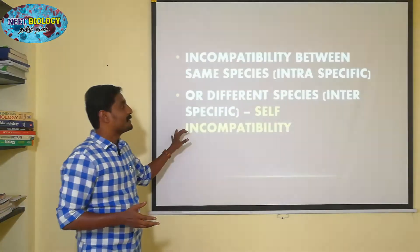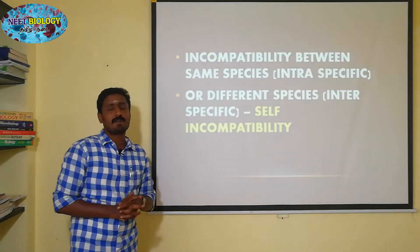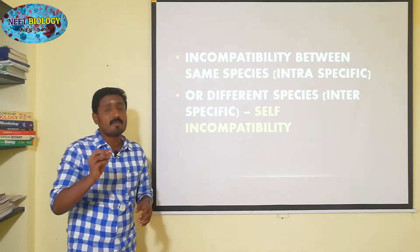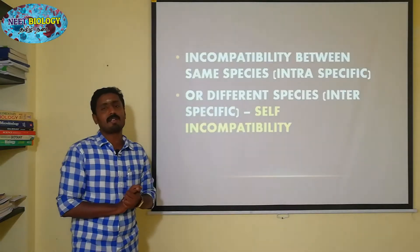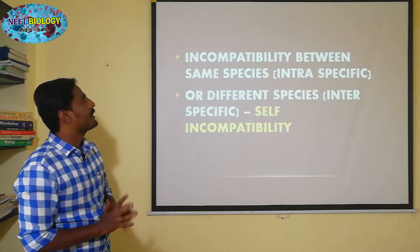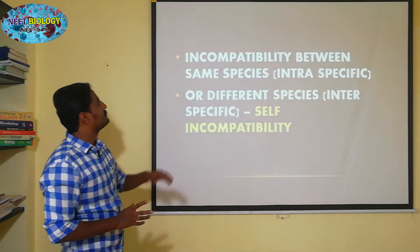This is self-incompatibility — a mechanism that prevents self-pollination within the same plant.